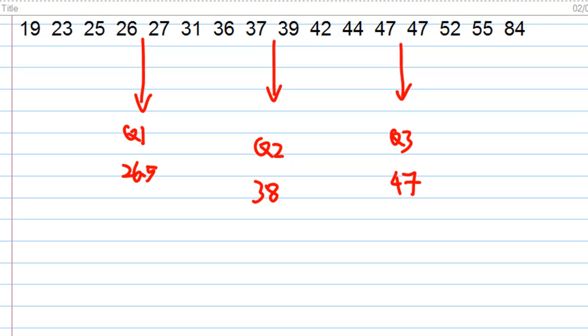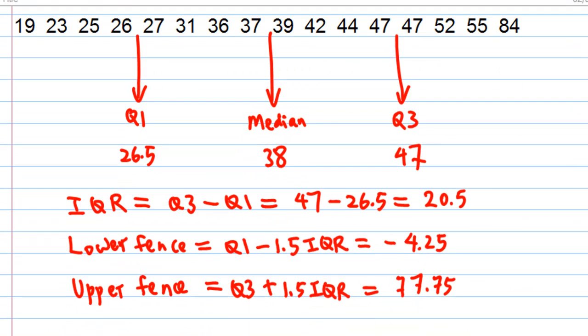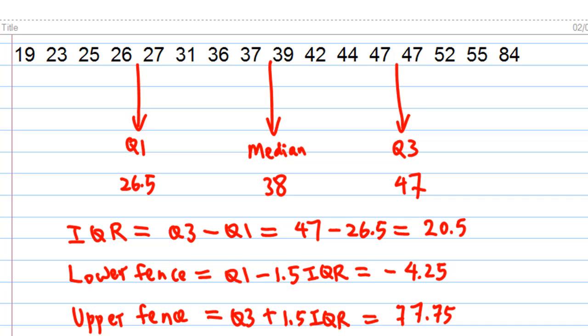In order to get the five number summary, we must find the interquartile range, which is Q3 minus Q1, 47 minus 26.5 equals 20.5. Then we find the lower fence, which is Q1 minus 1.5 times IQR, which is minus 4.25. And the upper fence, Q3 plus 1.5 IQR, which is 77.75.